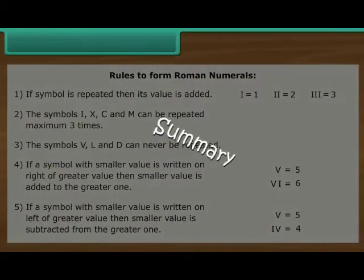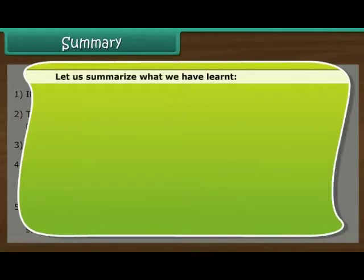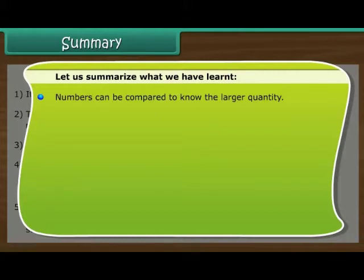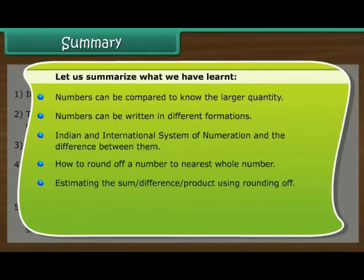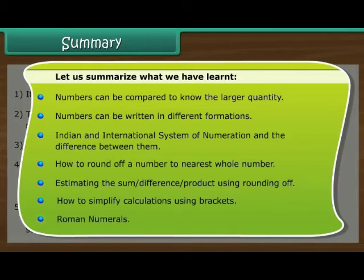Summary. Let us summarize what we have learned. Numbers can be compared to know the larger quantity. Numbers can be written in different formations. Indian and international system of numeration and the difference between them. How to round off a number to nearest whole number. Estimating the sum, difference, product using rounding off. How to simplify calculations using brackets. Roman numerals.